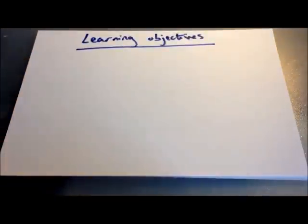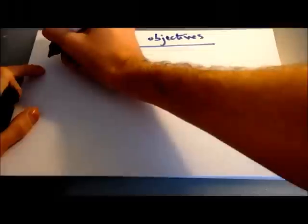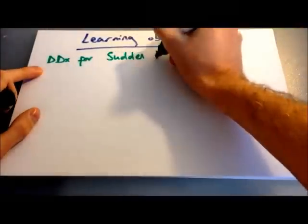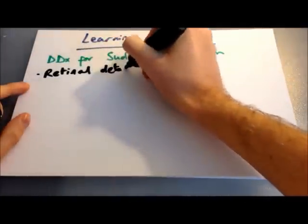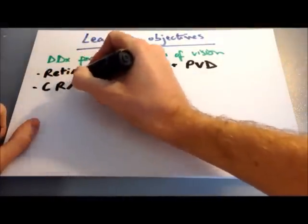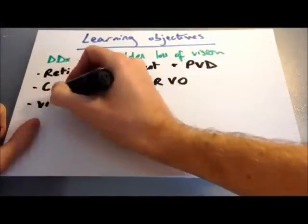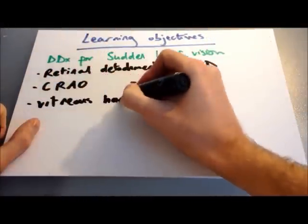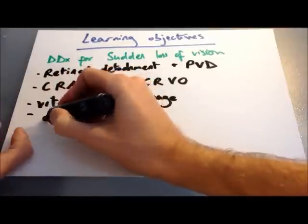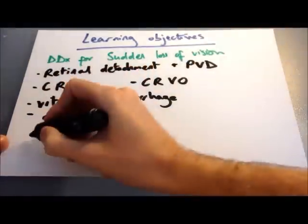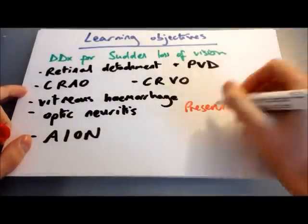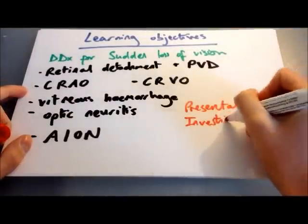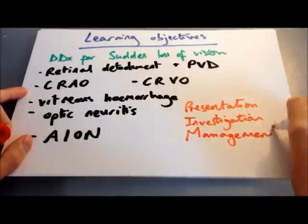The conditions we're going to be looking at for sudden loss of vision are retinal detachment and posterior vitreous detachment, central retinal artery occlusion, central retinal vein occlusion, vitreous haemorrhage, optic neuritis, and anterior ischemic optic neuropathy. We're going to be looking at the presentation of each of these conditions, their investigation and their management, to get a better idea of the differentials for a patient coming to us with sudden loss of their vision.